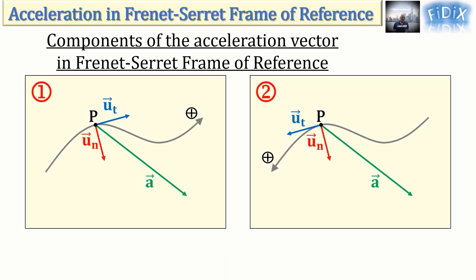In figures 1 and 2, we can see the trajectory of a moving particle P, its acceleration vector a, the chosen positive direction, and the unit vectors u_t and u_n of the Frenet-Serret frame of reference.